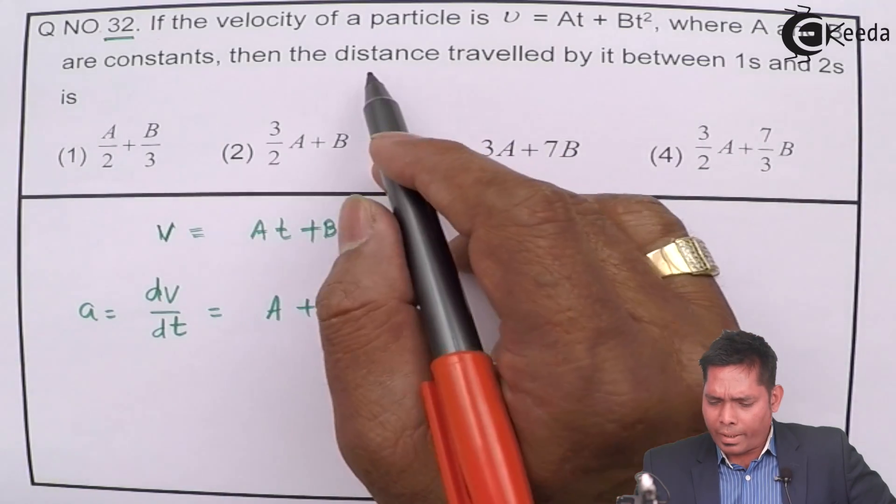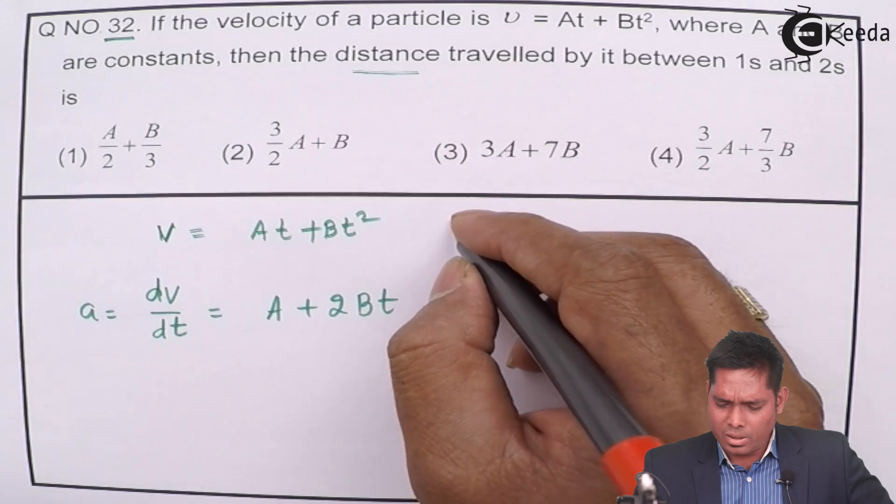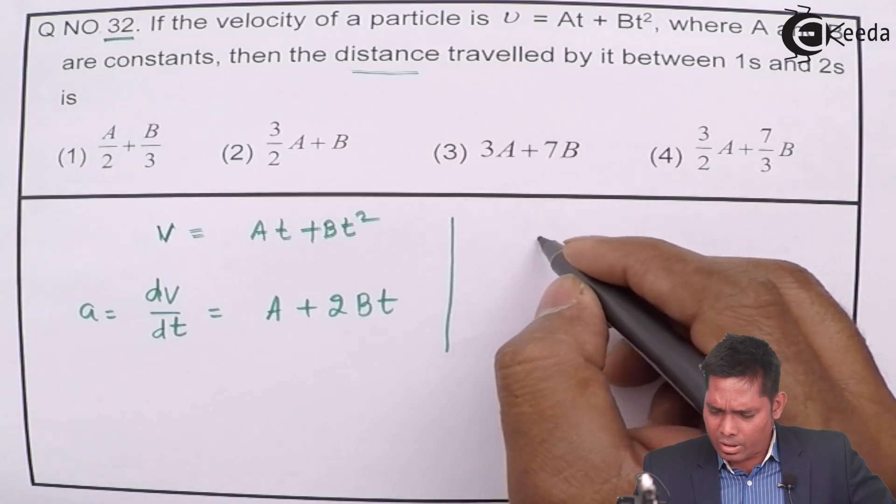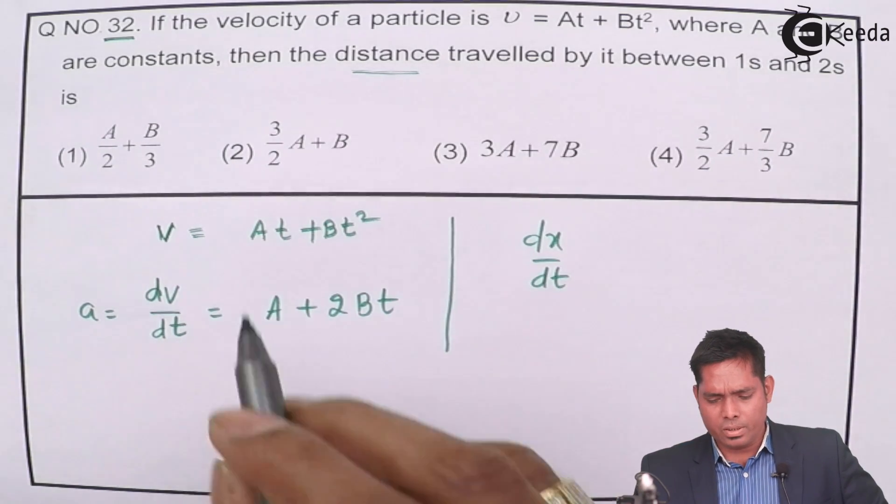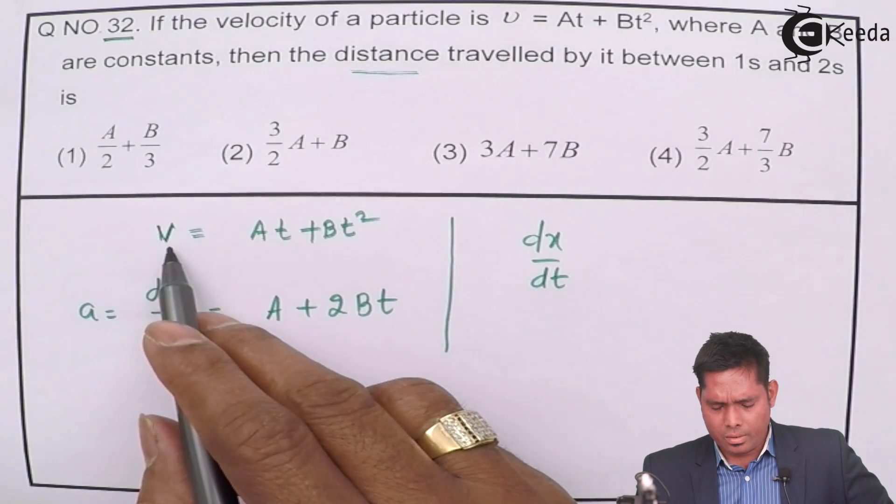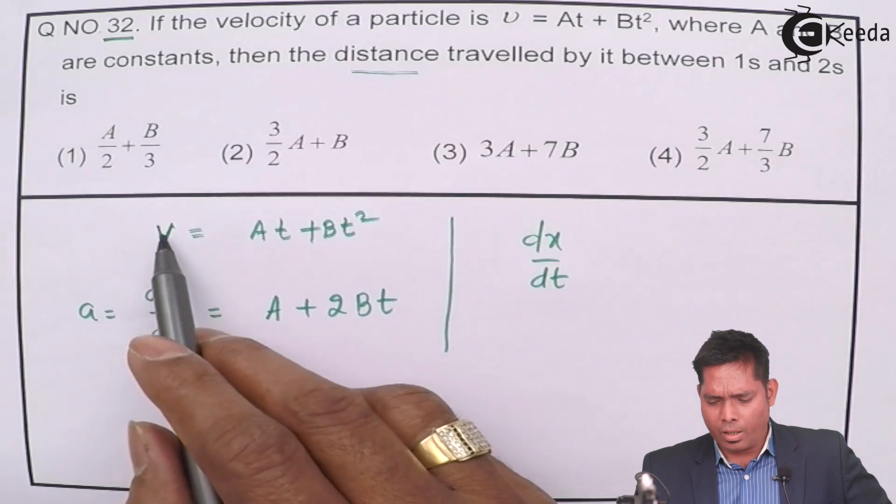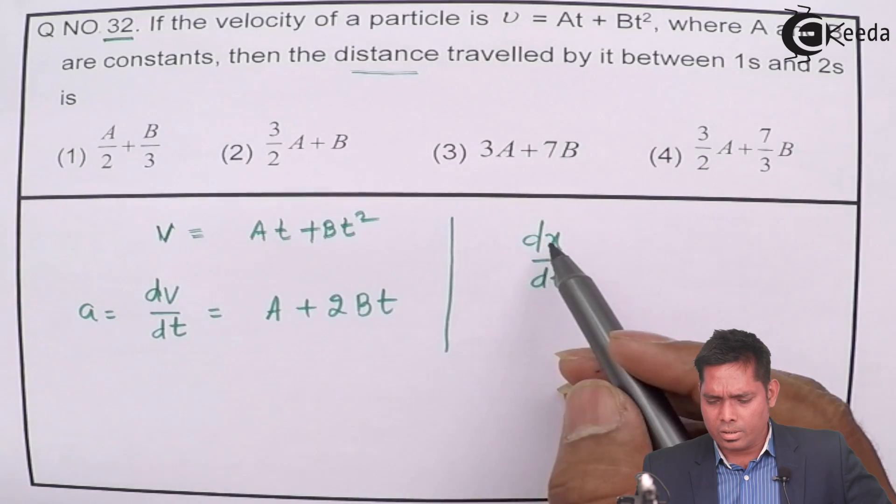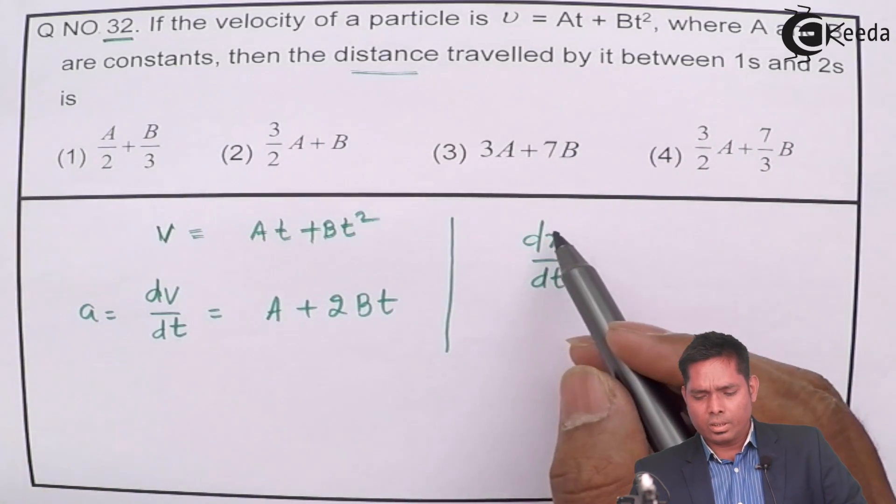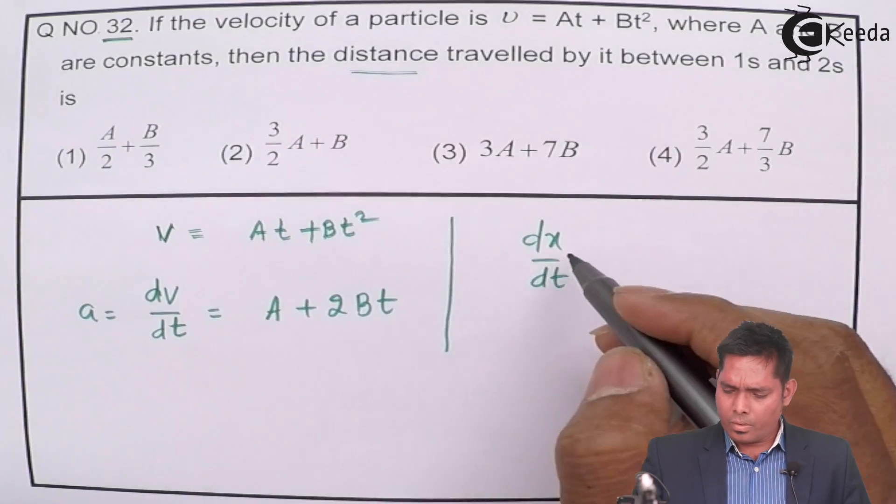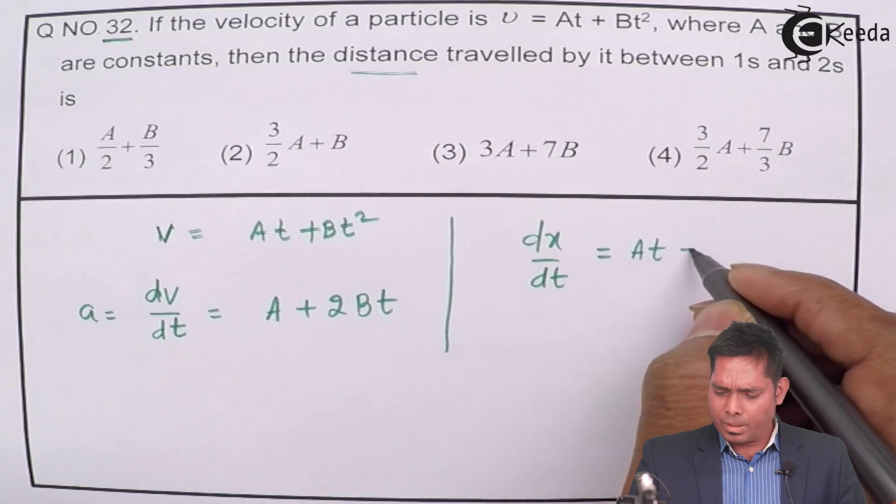Now, our aim is to find the distance traveled. To get the distance traveled, I must write V as dx over dt, because this is velocity and that is rate of change of displacement. The velocity is this, the magnitude of this is speed. dx over dt, I can write as AT plus BT square.